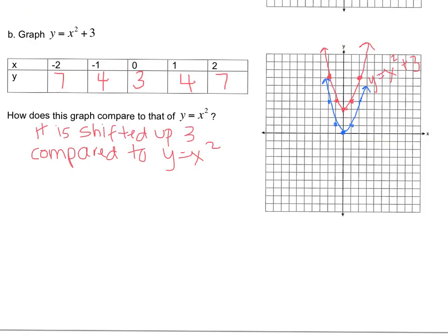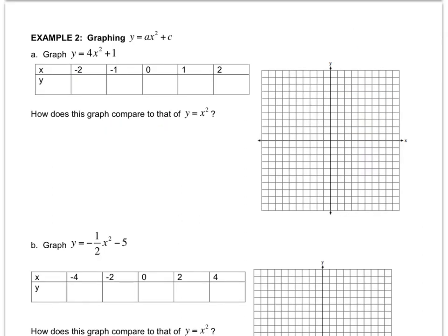All right. So it shifted up 3. And you can see that from having plus 3 in the equation. And again, it's not narrower. It's only shifted up. They are the same width. And the reason that we know that they're the same width is because they both have an a value of 1, which is what we learned about in the last lesson.